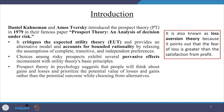Considering the work of Kahneman and Amos Tversky on prospect theory — both of them introduced prospect theory in 1979 and their famous paper was called 'Prospect Theory: An Analysis of Decision Under Risk.' It is also known as loss aversion theory because it points out that the fear of loss is greater than the satisfaction from profit. This theory critiques expected utility theory, providing an alternative model that accounts for bounded rationality by relaxing the assumptions of complete transitivity and independent preferences. Choices among risky prospects exhibit several pervasive effects inconsistent with EUT's basic principles.